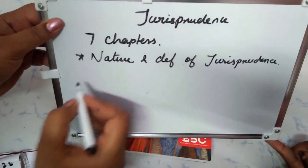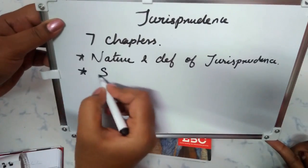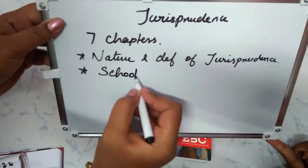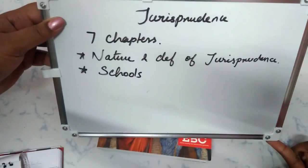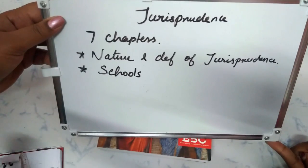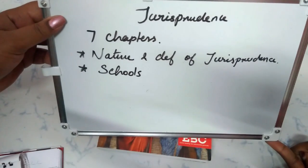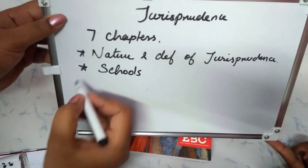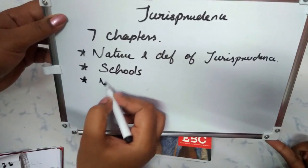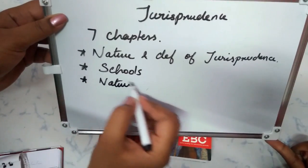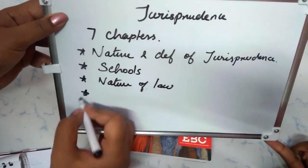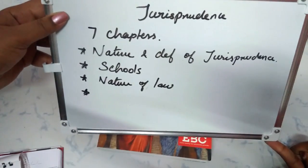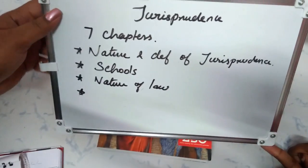In the second chapter, the third one is schools. So what are schools? If you study, there is the analytical school and the historical school. The first one is law, then nature of law. The fourth chapter is concept of state and sovereignty.